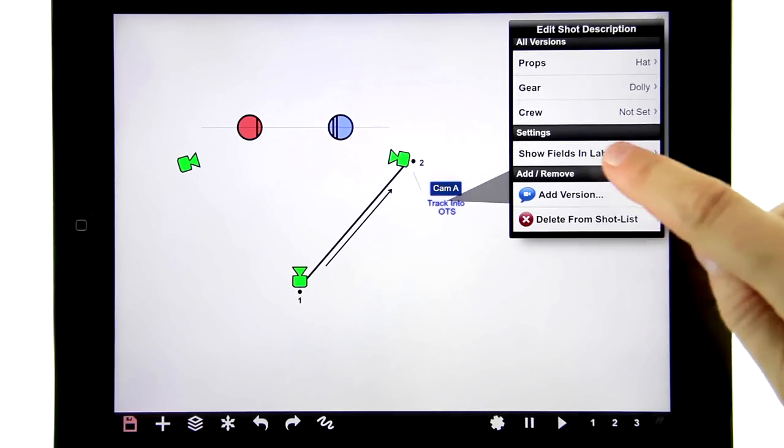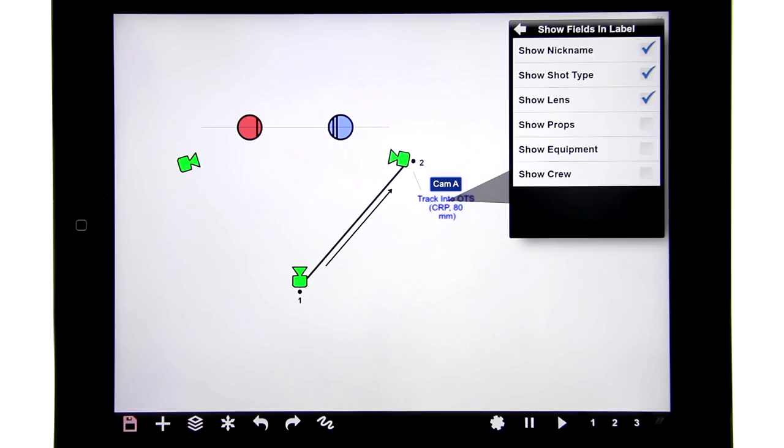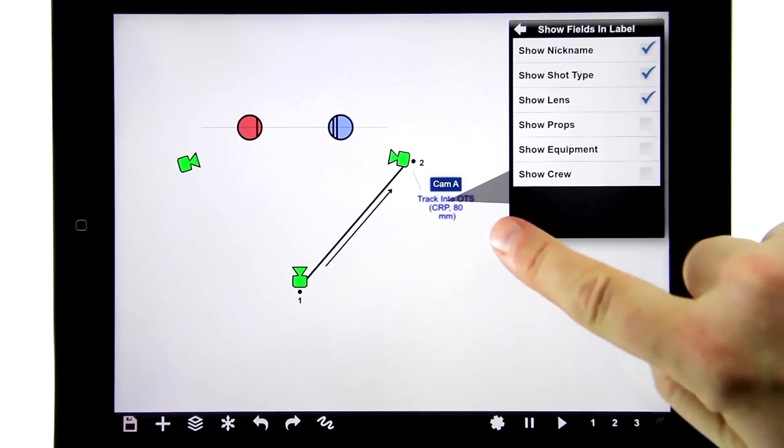I also have a thing called 'show fields in label' which automatically writes shot data into the labels so you don't have to write it twice. You can see my slow creep and the lens are showing up in the label.